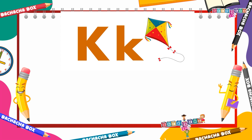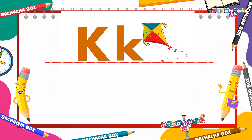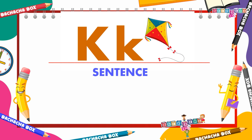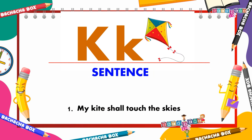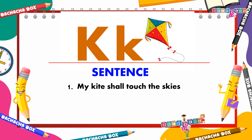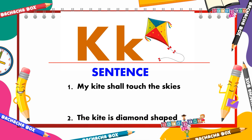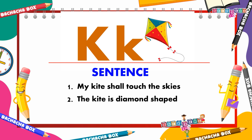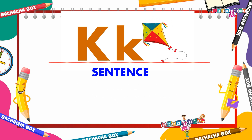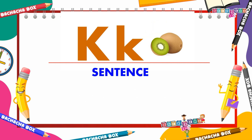K for kite. Let's say the sentences together. My kite shall touch the skies. The kite is diamond shaped.